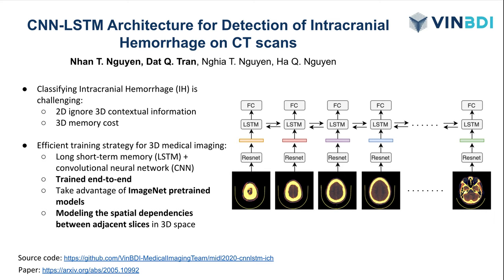In this work, we propose a more efficient training strategy for 3D medical imaging. Our method attaches a long short-term memory (LSTM) on top of a convolutional neural network so that the whole model can be trained end-to-end. The advantage is leveraging pre-trained models while still modeling the spatial dependency between adjacent slices over time.